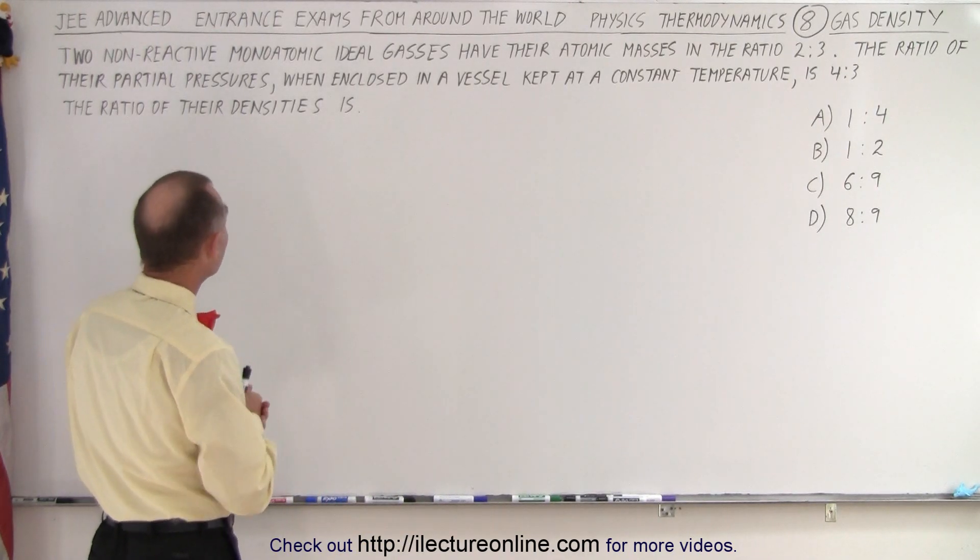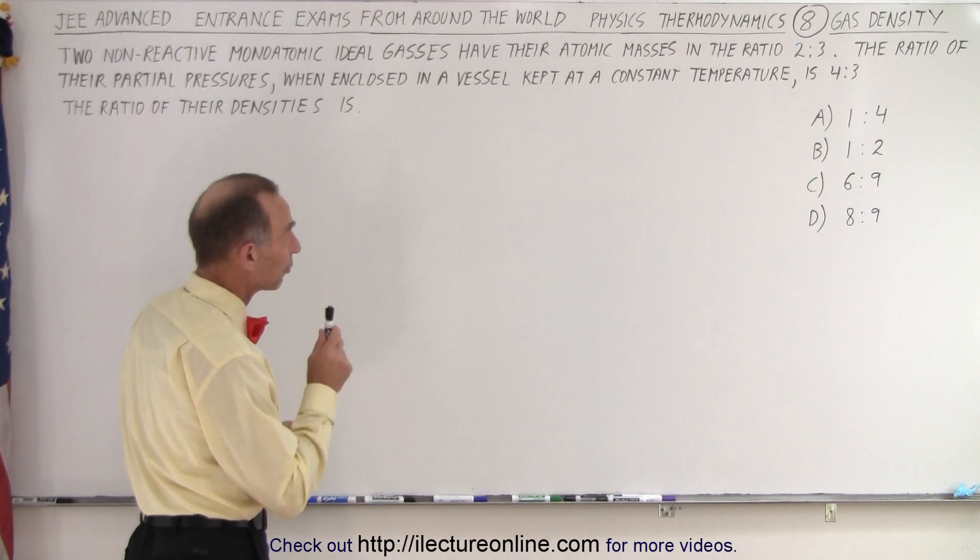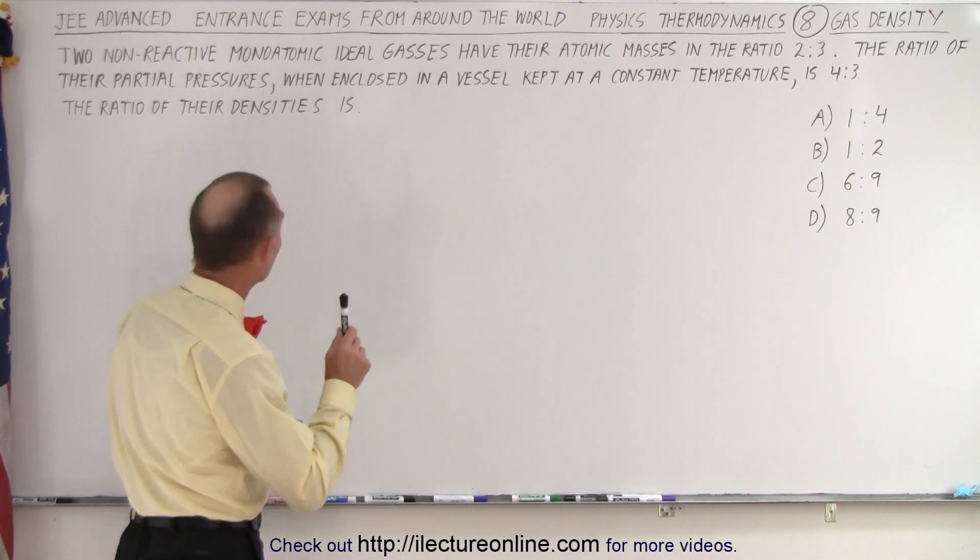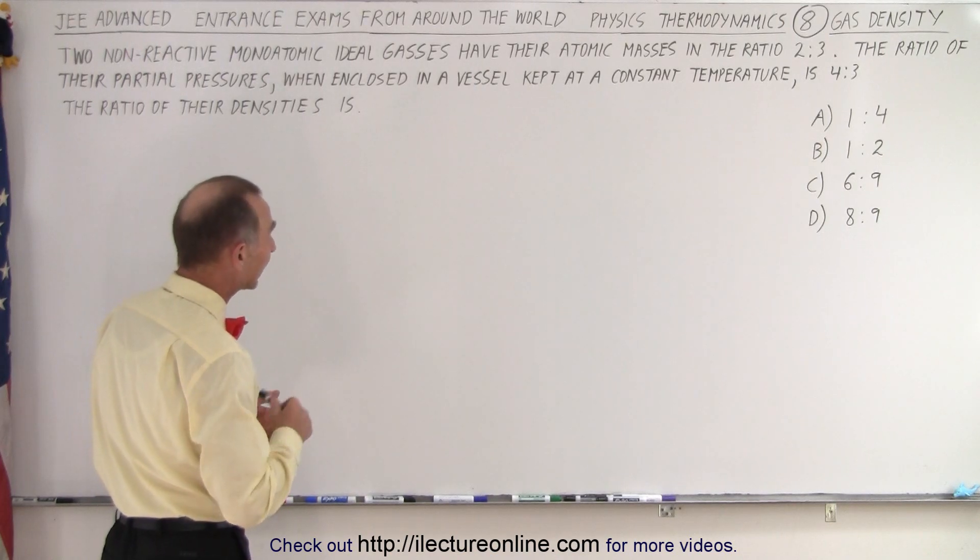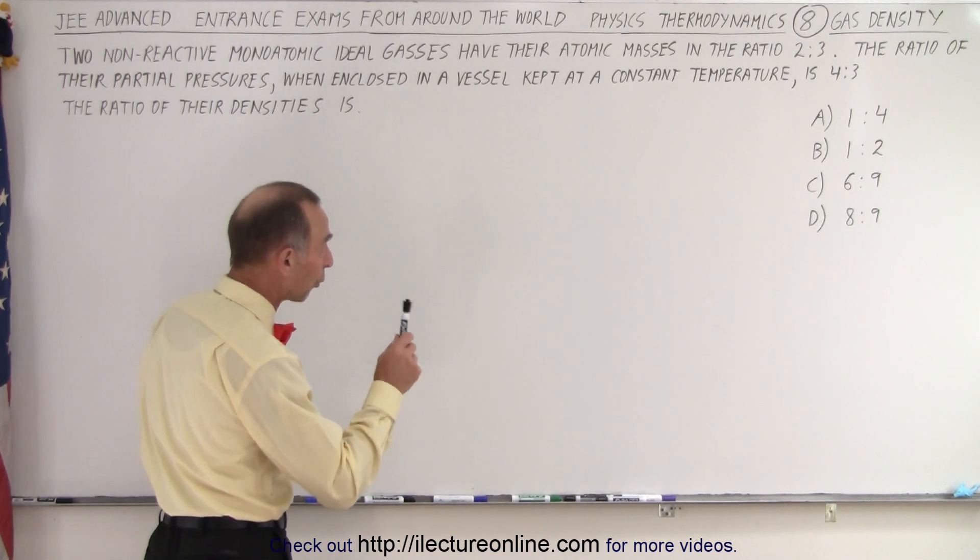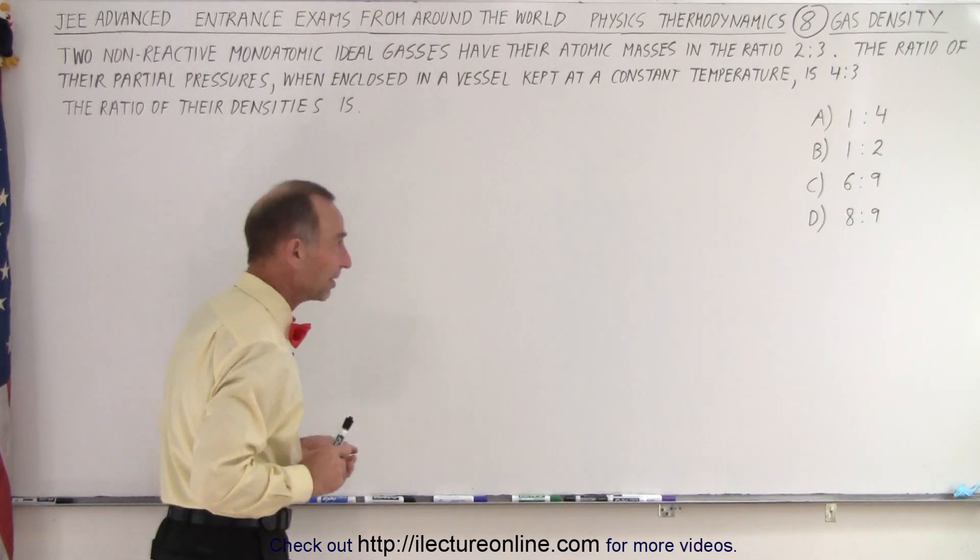Two non-reactive monatomic ideal gases have their atomic masses in the ratio of 2 to 3. The ratio of their partial pressures when enclosed in a vessel kept at a constant temperature is 4 to 3. What is the ratio of their densities?